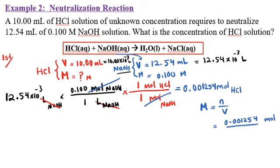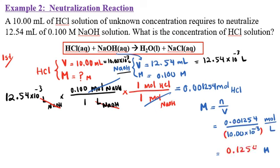At this point, instead of adding another conversion factor, I'll find moles of HCl and then use the molarity equation. Moles of HCl = 12.54×10⁻³ × 0.100 × (1/1). Then molarity of HCl = n/V = (moles of HCl) / (10.00×10⁻³ L). Using parentheses carefully in the calculator, the final answer is 0.1254 M. With four significant figures throughout, we keep all four sig figs: 0.1254 M.